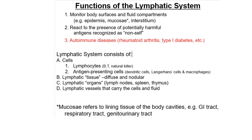The other main function of the lymphatic system is to recognize self from non-self. There are certain diseases associated with when the body starts reacting to its own self; these are called autoimmune diseases. The lymphatic system mainly consists of cells — including B and T lymphocytes and natural killer cells.